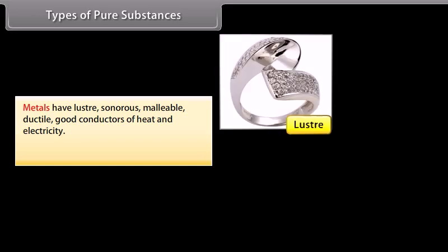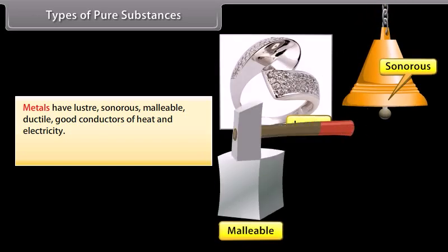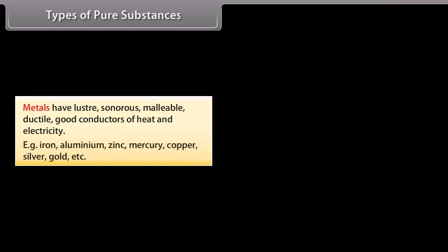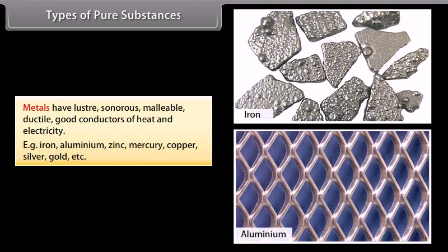Metals have lustre, sonorous, malleable, ductile, good conductors of heat and electricity. Examples: iron, aluminium, zinc, mercury, copper, silver, gold, etc.